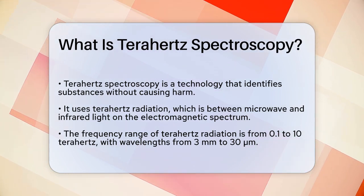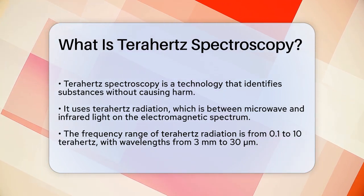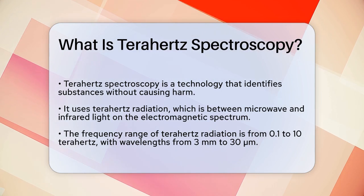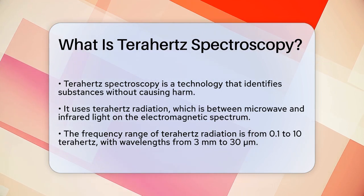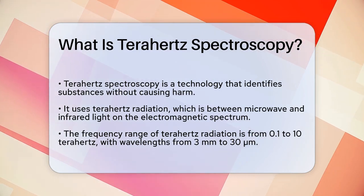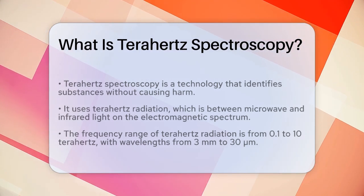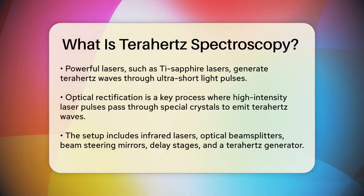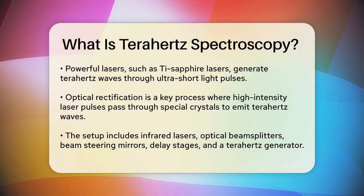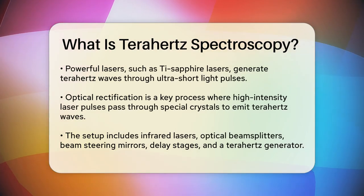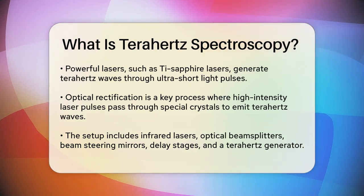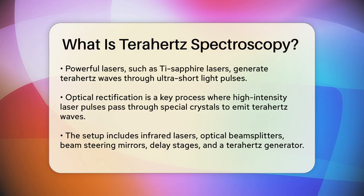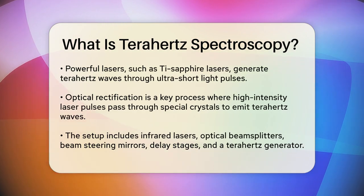To generate these terahertz waves, scientists often use powerful lasers, such as Ti:sapphire lasers, which produce ultra-short pulses of light. These pulses are then converted into terahertz radiation through processes like optical rectification, where a high-intensity laser pulse passes through a special crystal material, causing it to emit terahertz waves.